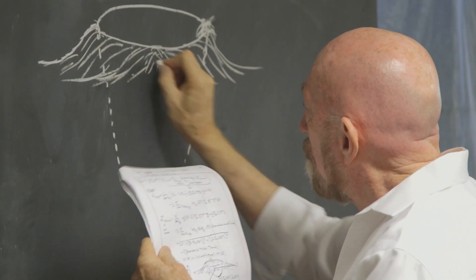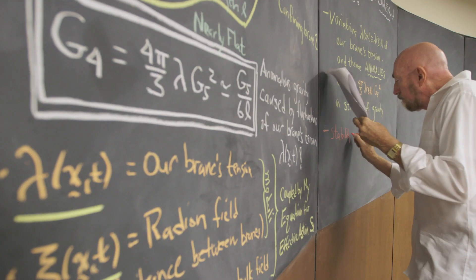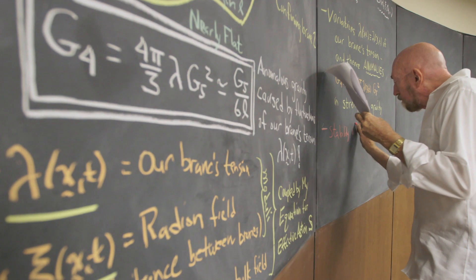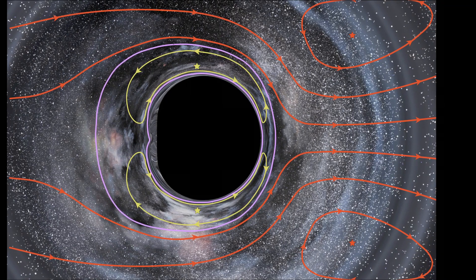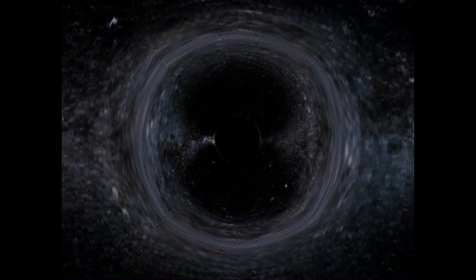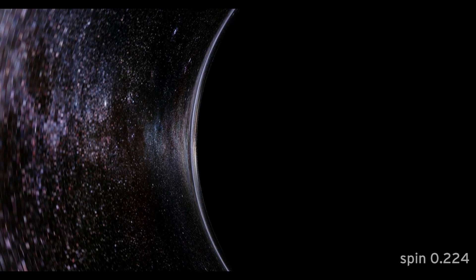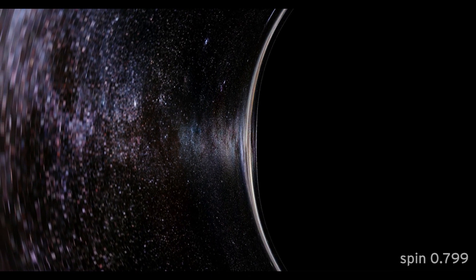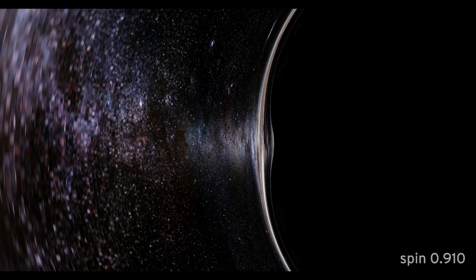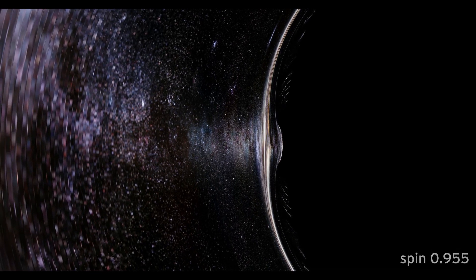I worked out the equations that would enable him to do the gravitational lensing. You have light that comes from a star behind the black hole — it may come in, go around the black hole several times, and then come to the camera. You wind up with several different images of the star. The black hole warps the space so much it just looks like you're looking at a strange sort of funnel in the sky with this intensely black circle at the middle of it.